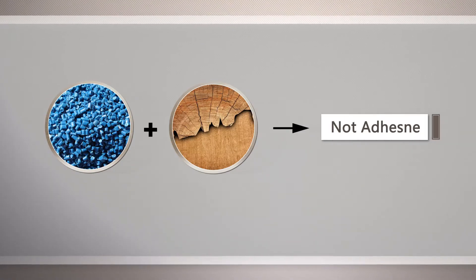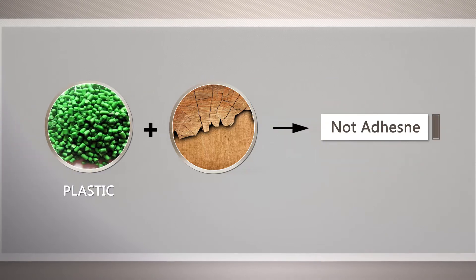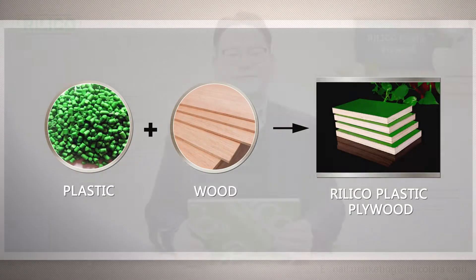Hi everyone, as you all know, plastic is not adhesive to wood, so today I would like to talk about how we laminate plastic to wood seamlessly for the radical plastic plywood.